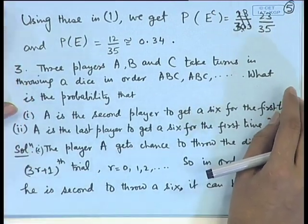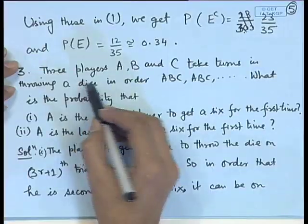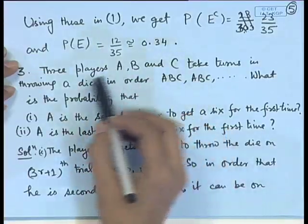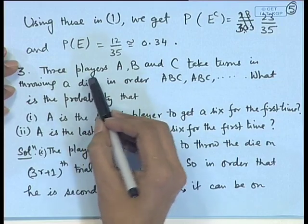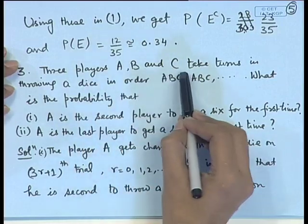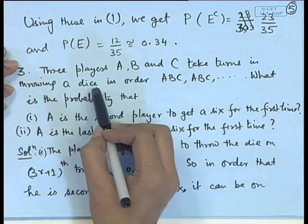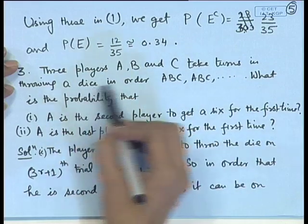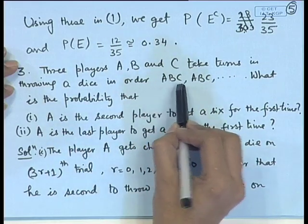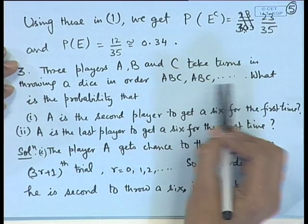Let us look at one more problem involving the splitting of an event into possibilities and using the concept of independence. Consider rolling of a die: three players A, B, and C take turns throwing a die in order A, B, C, A, B, C, and so on.